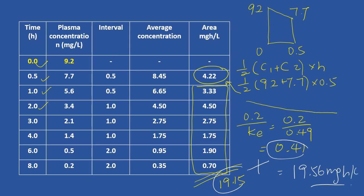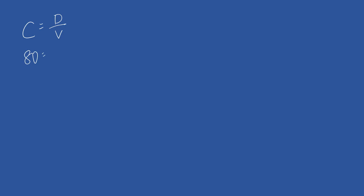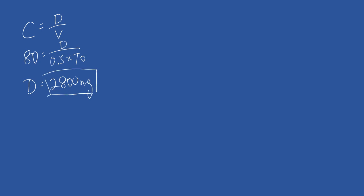This question is about intravenous bolus administration. Pause the video to attempt the questions. For part one, we need to recommend a bolus loading dose using C equals dose divided by volume. The target concentration is 80, and volume is 0.5 multiplied by 70. Working out the dose gives 2800 mg.